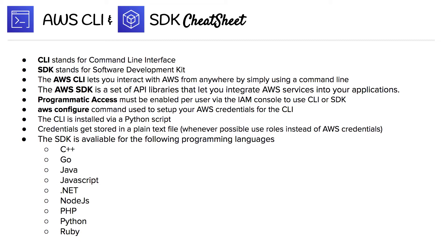Programmatic access must be enabled per user via the IAM console to use the CLI or SDK. The AWS config command is used to set up your AWS credentials for the CLI. The CLI is installed via a Python script; credentials get stored in a plain text file. Whenever possible, use roles instead of AWS credentials.